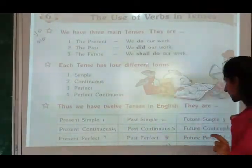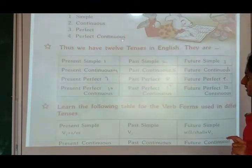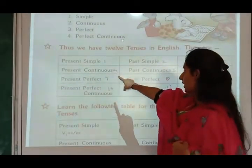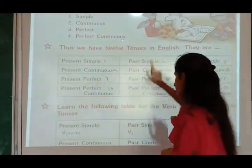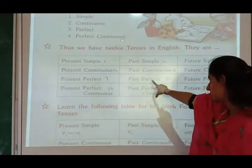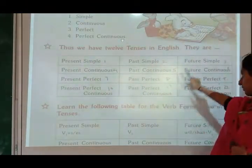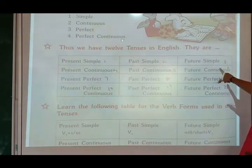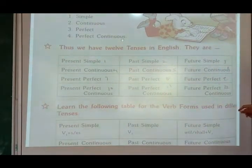Here you can see the twelve tenses in English: present simple, present continuous, present perfect, and present perfect continuous. Past simple, past continuous, past perfect, and past perfect continuous. Similarly, future simple, future continuous, future perfect, and future perfect continuous.